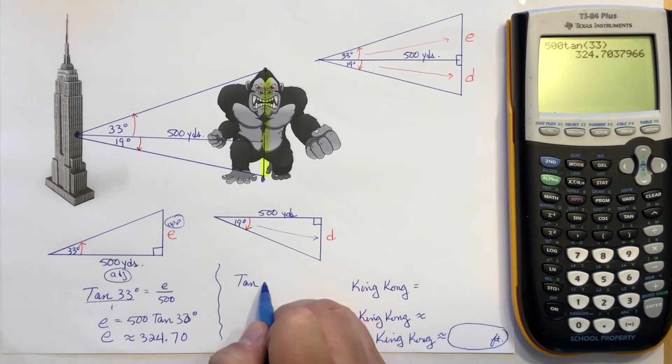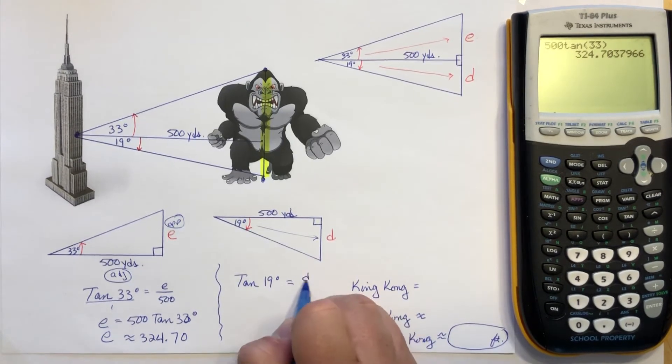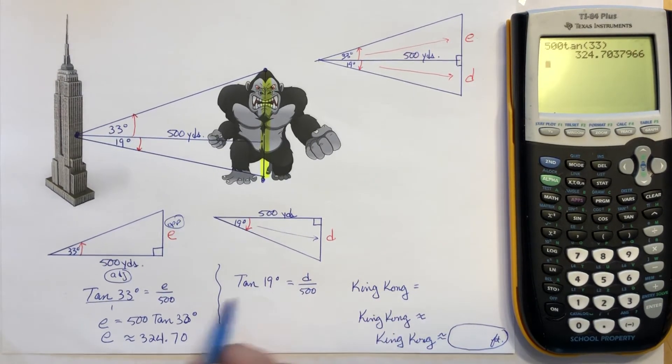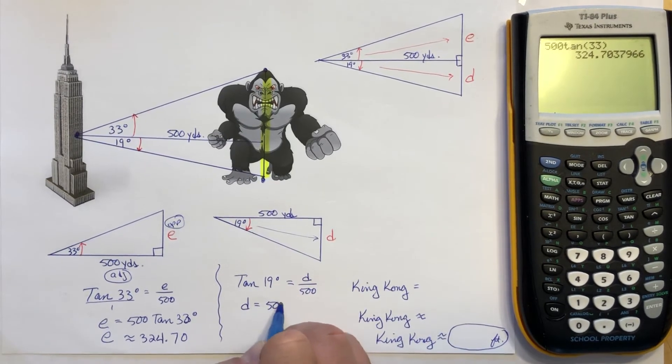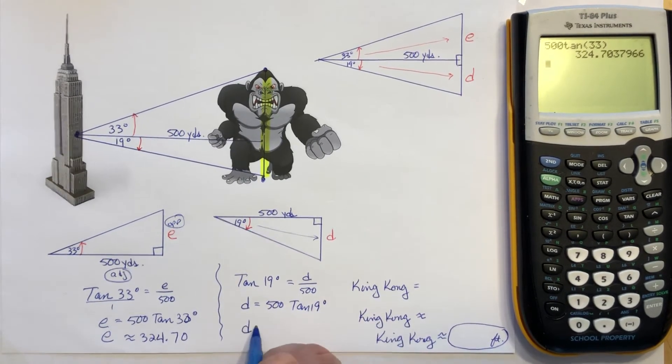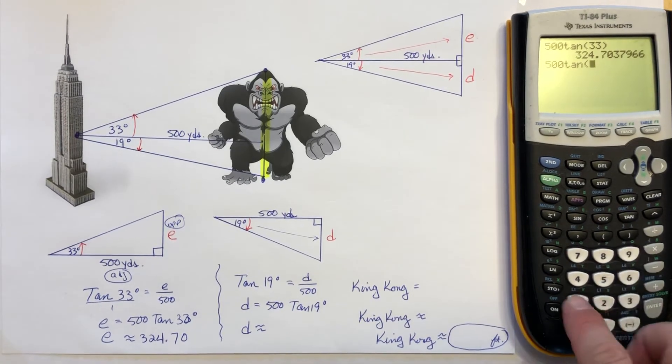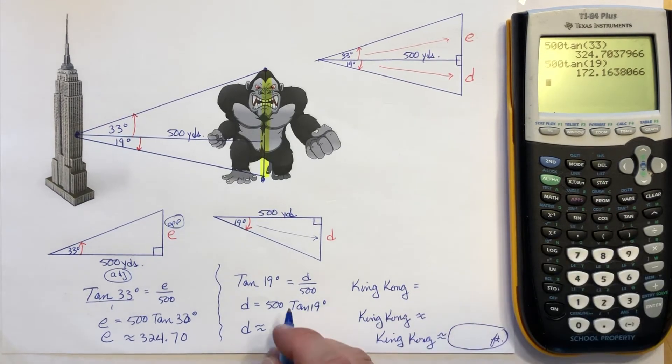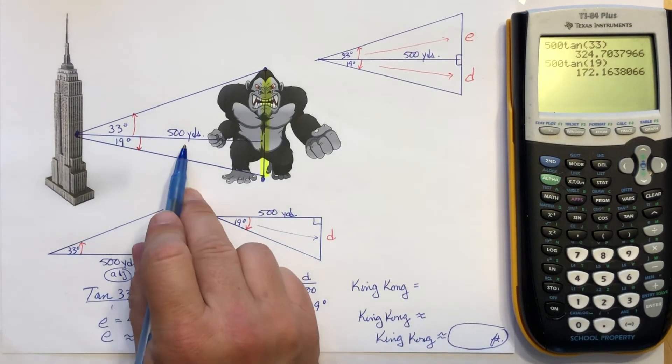So, but this time tangent of 19 degrees equals opposite over adjacent. So it's virtually the same equation as we just did, but now with 19 degrees. So I'm gonna skip a little bit ahead and write the length of D will be 500 tangent 19. So again, we set to degrees. We're gonna type in 500 tangent 19. Close it up. About 172.16. Okay. Both of these are in yards. Okay.